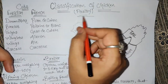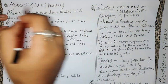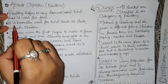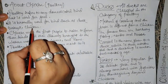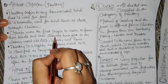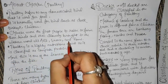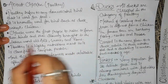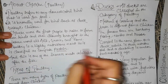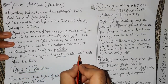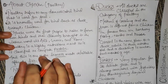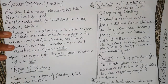Poultry refers to any domestic bird used for food. It broadly includes birds such as duck, turkey, and chicken. The Chinese were the first people to raise and farm these birds, and they were slowly brought to the Western world via Asia, Greece, and Rome. Poultry is highly nutritious meat classified as a complete protein, and it is one of the leanest meats available — second only to fish.